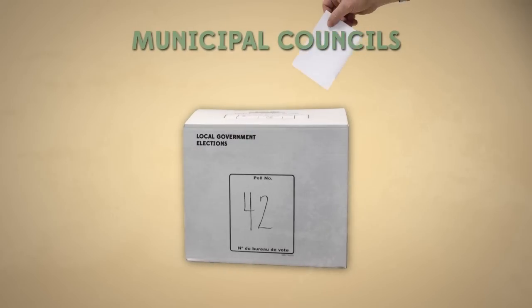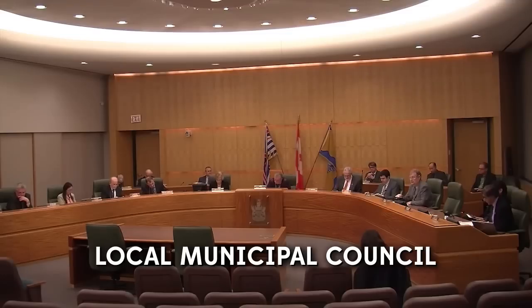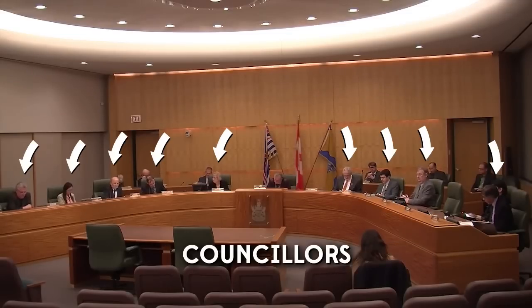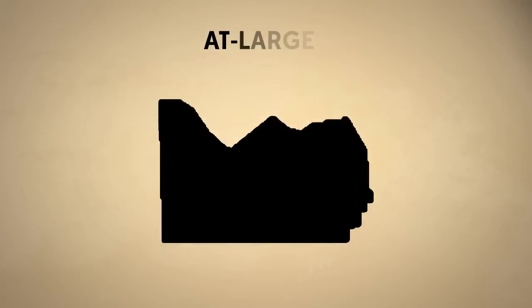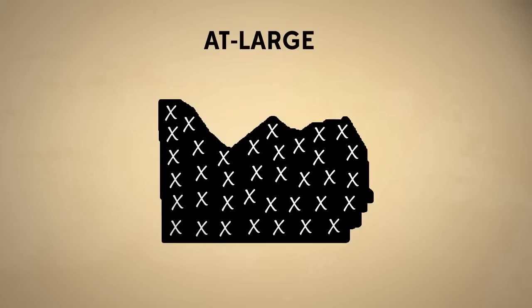Local municipal councils are democratically elected bodies which govern the municipality. They're comprised of a head of council, called a mayor, and several councillors. With just one exception, councillors and mayors are elected at-large, which means by all eligible voters within a municipality.